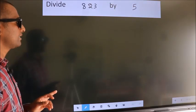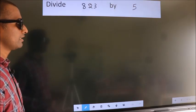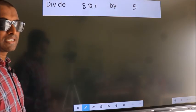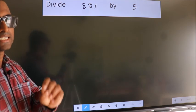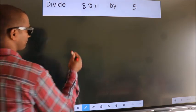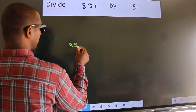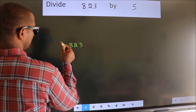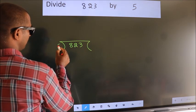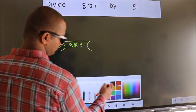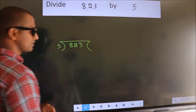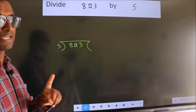Divide 823 by 5. To do this division, we should frame it in this way. 823 here, 5 here. This is your step 1.